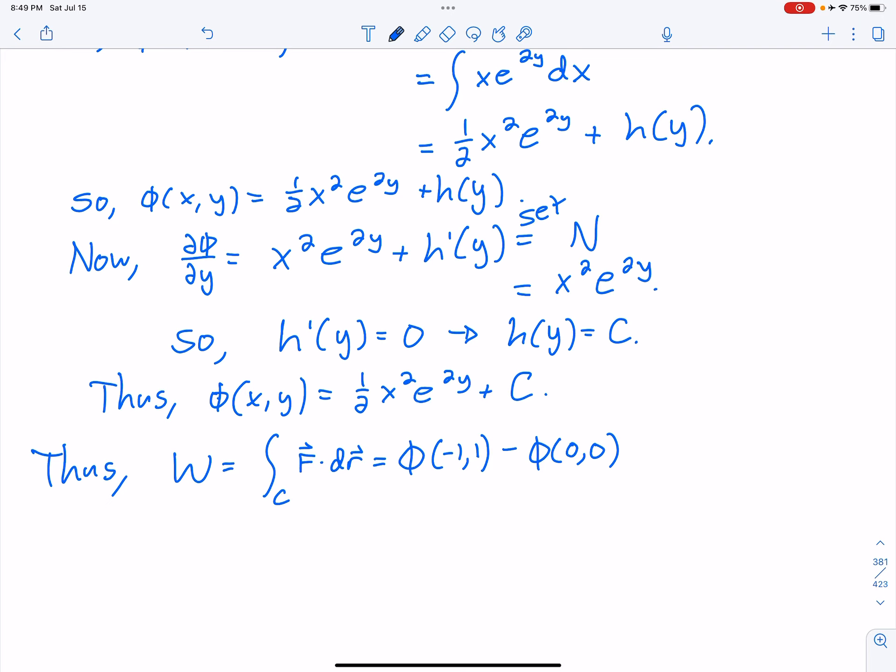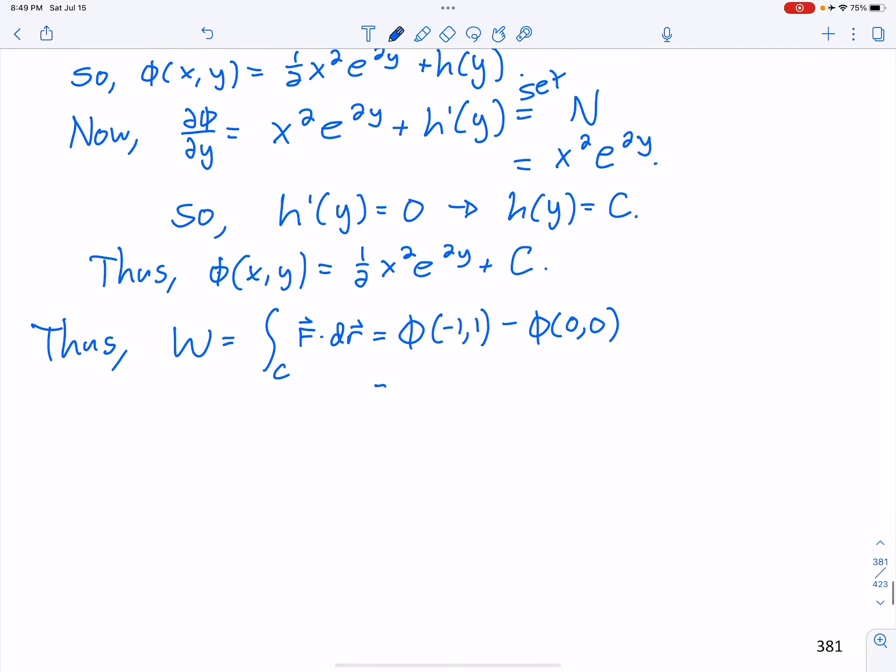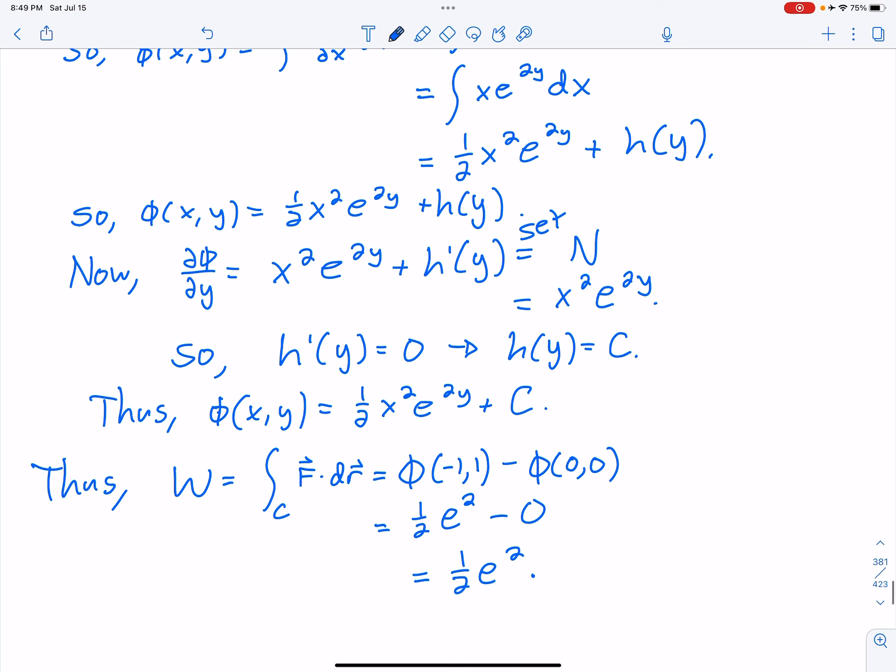If we just plug these into the function that we just came up with, we're going to get 1 half, E, to the 2nd power, and then minus, that's just going to be a 0 because of the X. So the work here is equal to 1 half, E squared. We don't have units. We never discussed units in our problem, so we just leave it there. There's our work.